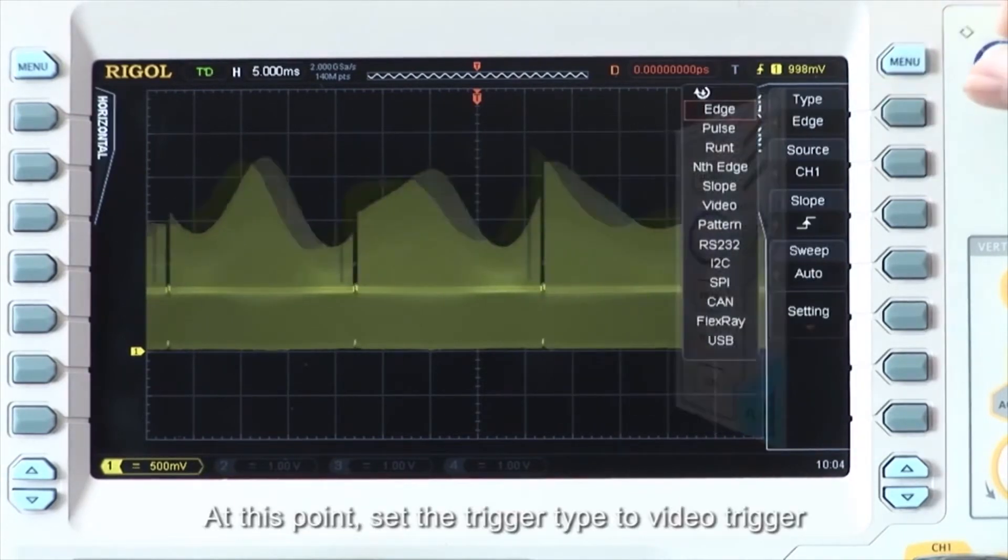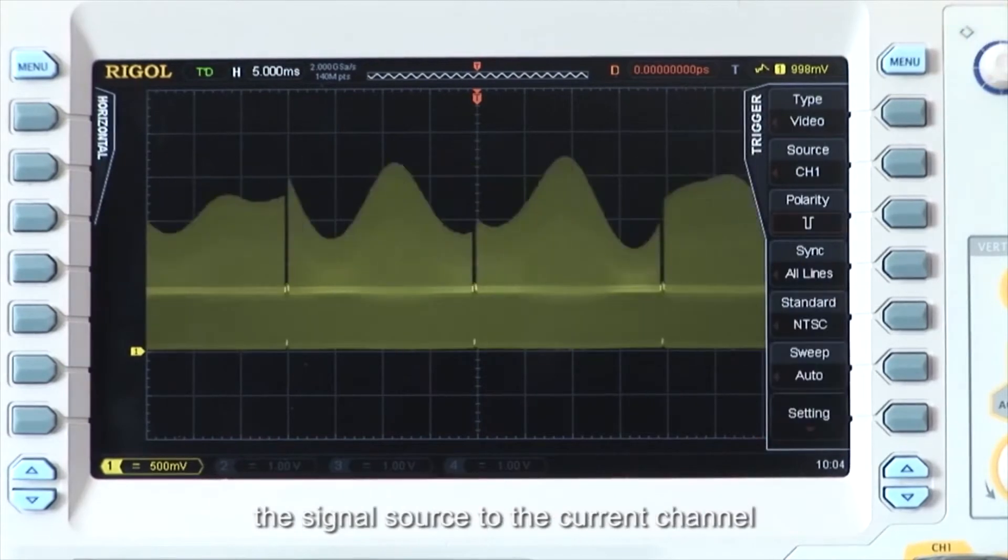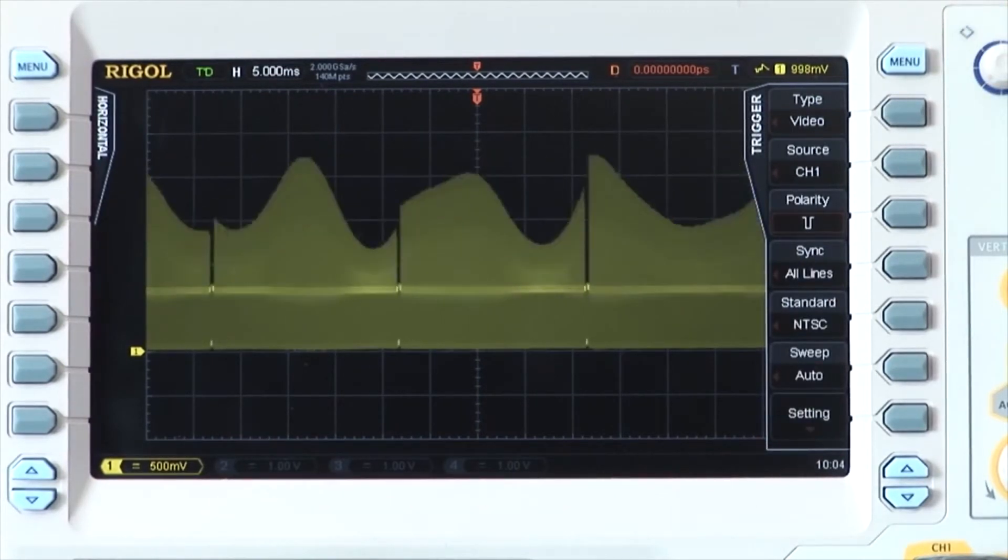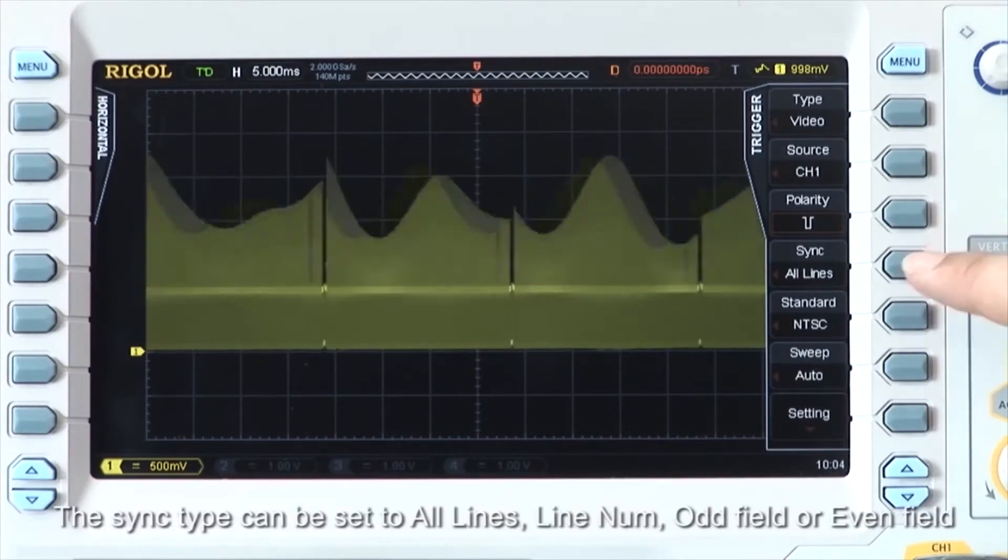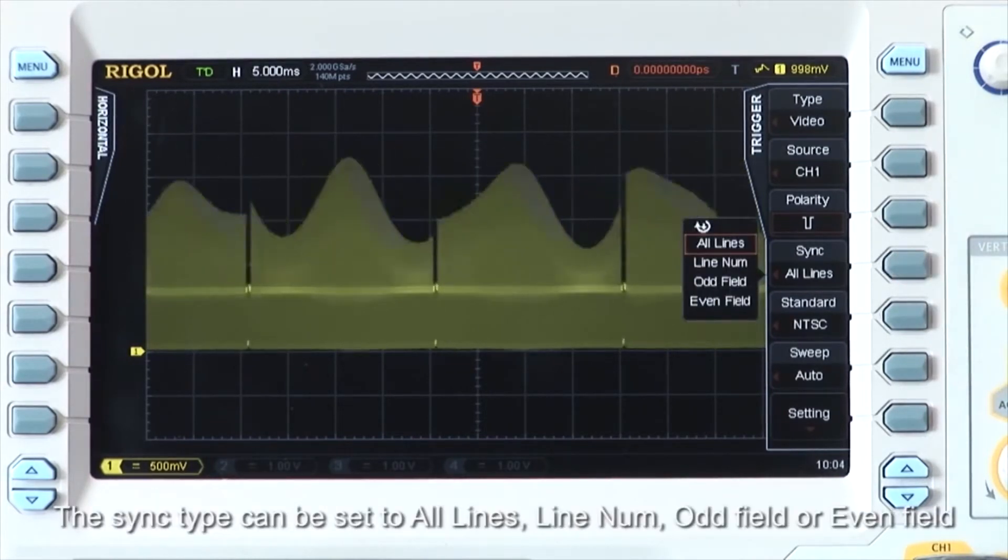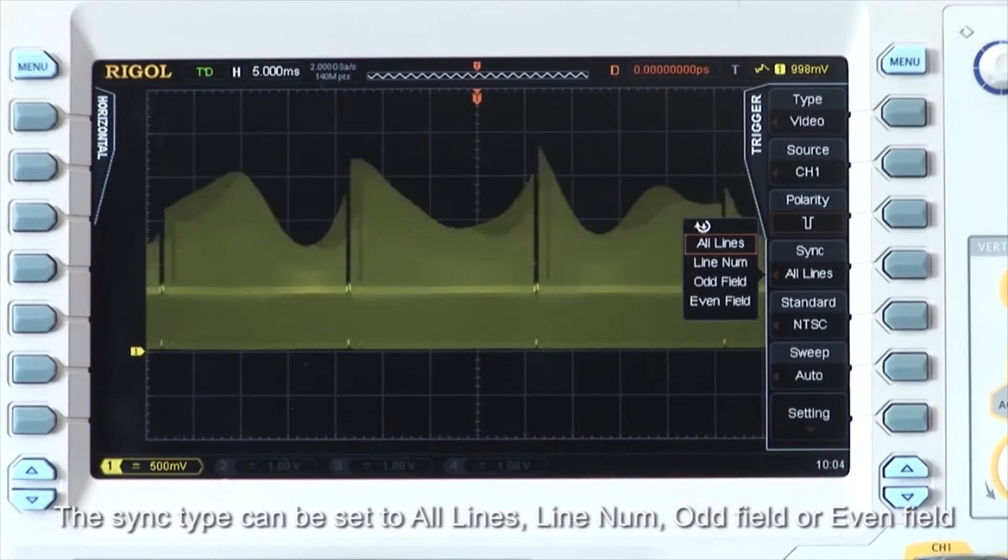At this point, set the trigger type to video trigger, the signal source to the current channel, the video polarity to positive or negative. Here negative is selected, and then the sync type can be set to all lines, line num, odd field, or even field.